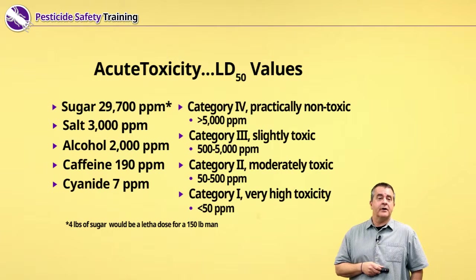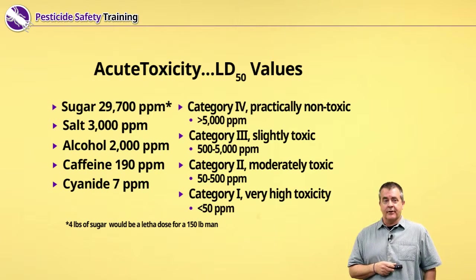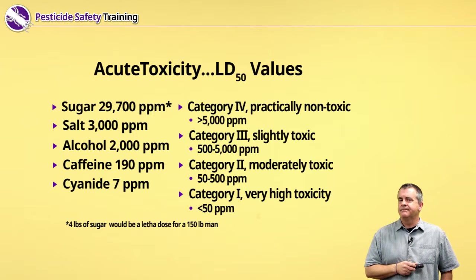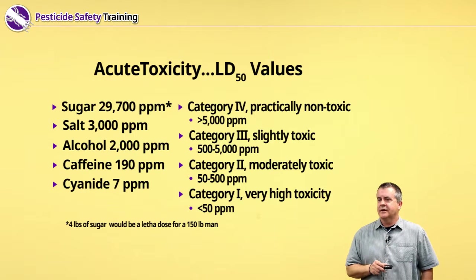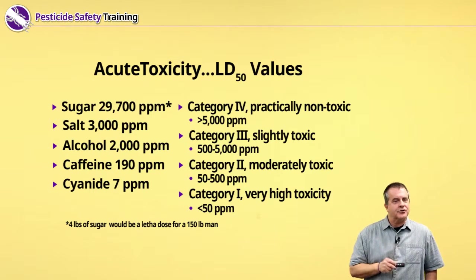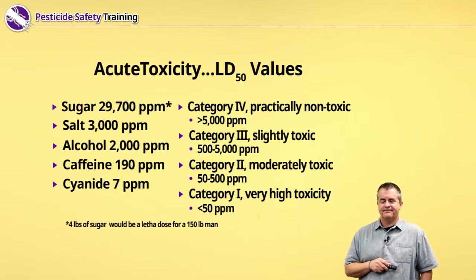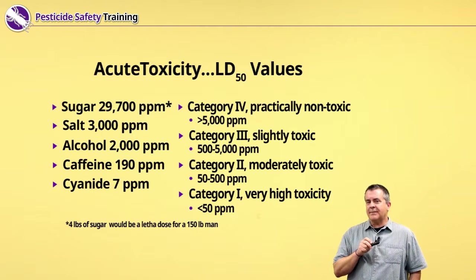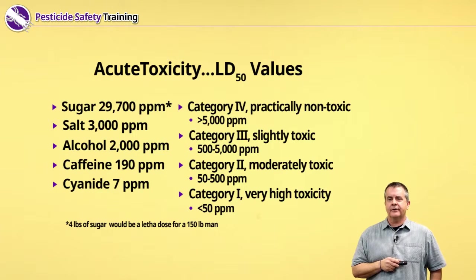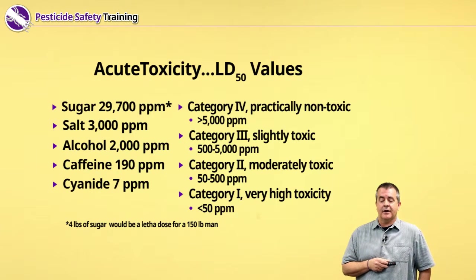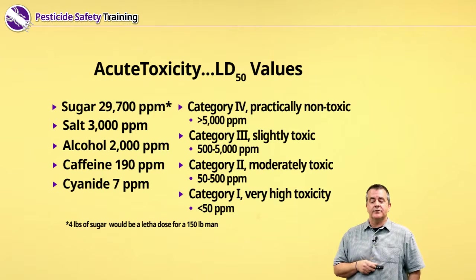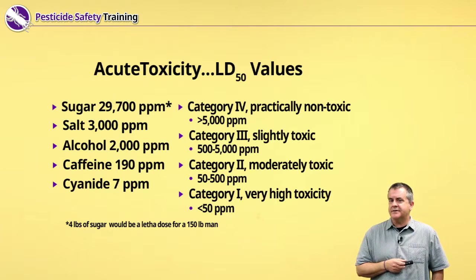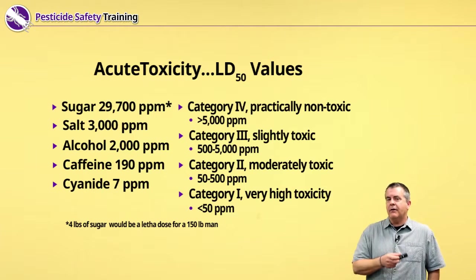Let's look at some common compounds we all have exposure to and look at the relative LD50 values. Sugar: around 30,000 parts per million — not very toxic from an acute standpoint. You'd have to eat a lot of sugar at one sitting to kill yourself. Salt is about 10 times more toxic than sugar, but neither is particularly toxic — both are in the slightly to practically non-toxic range. Alcohol is about in the same range of toxicity as salt: 2,000 for alcohol, 3,000 for salt.